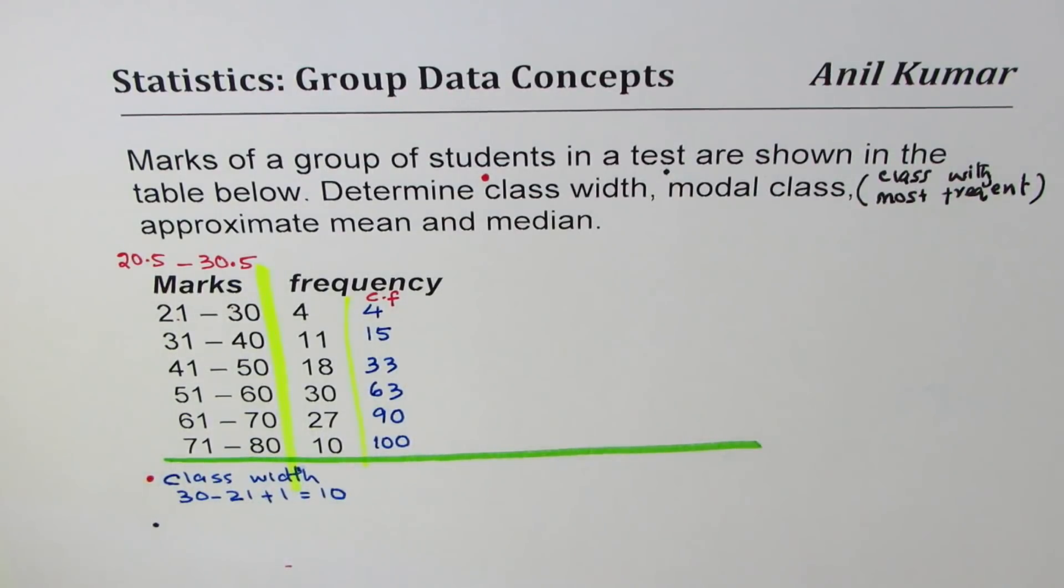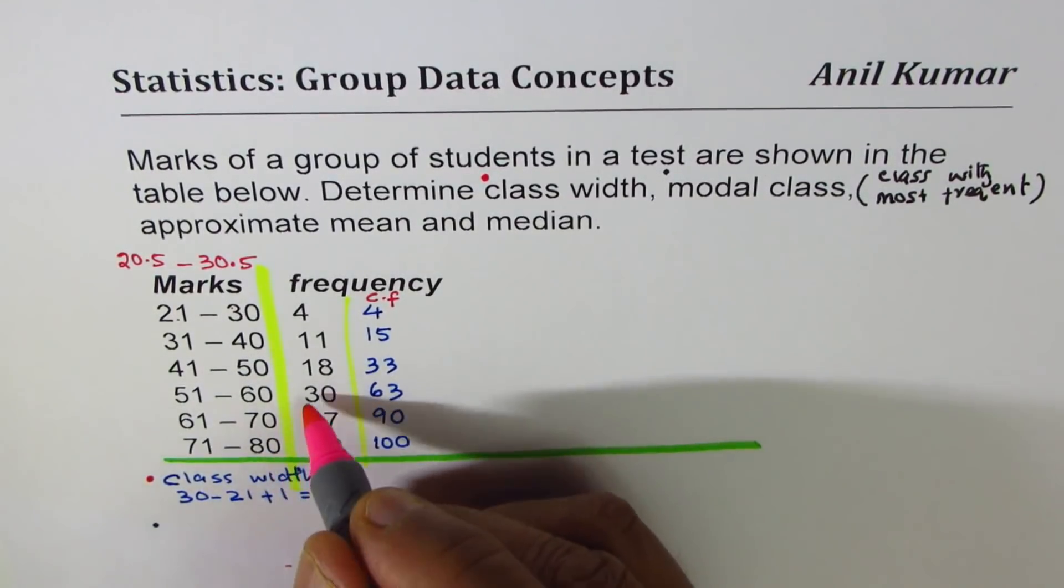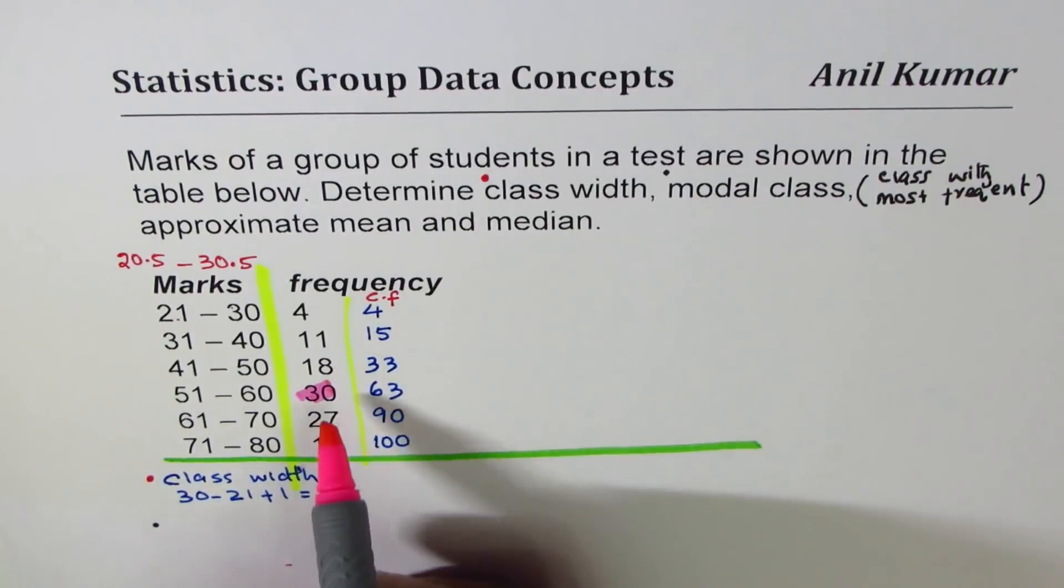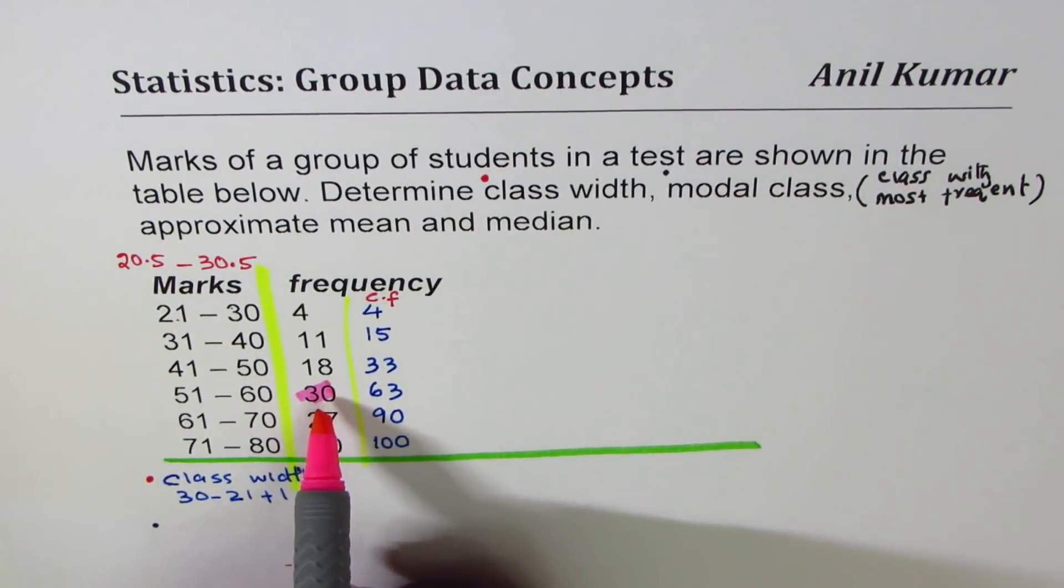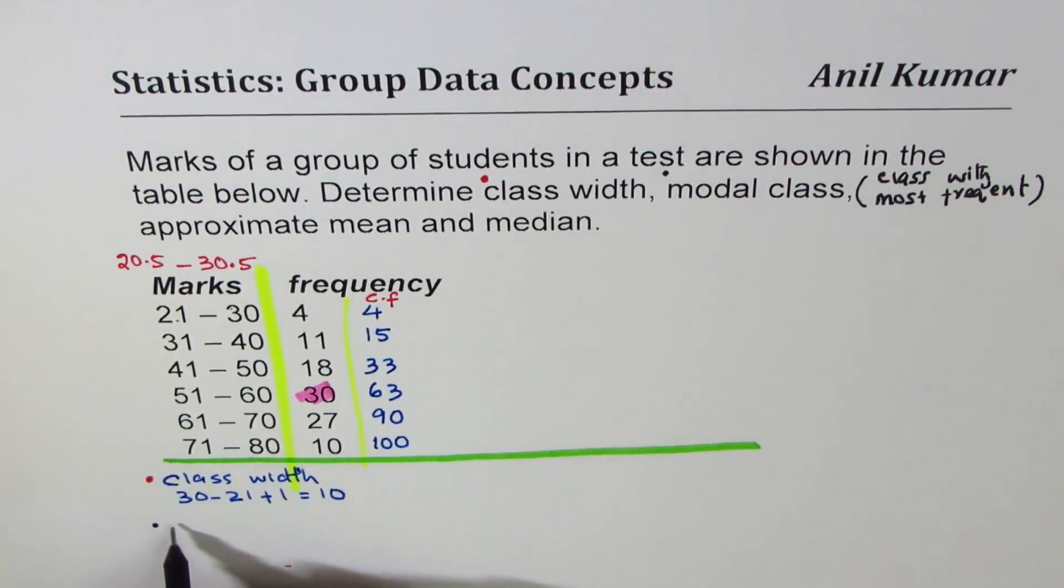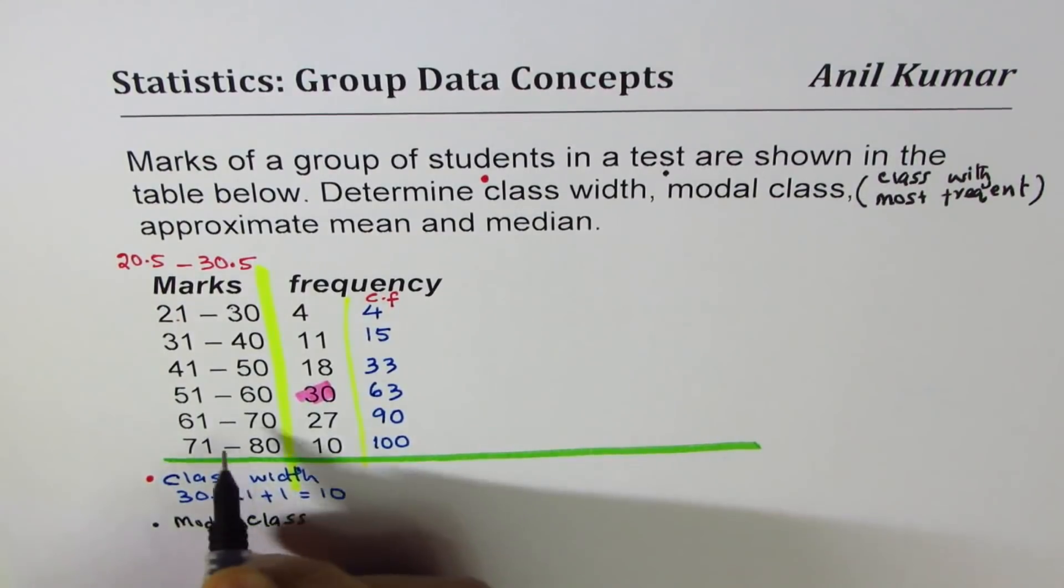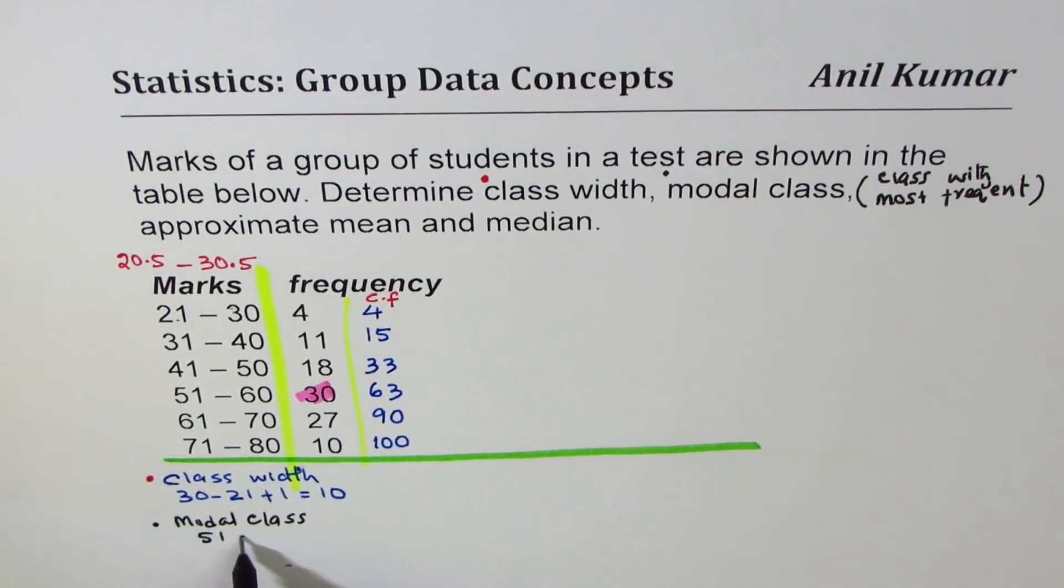So just look for the highest number in the frequency. In our case the highest number happens to be 30. So that is most frequent. The class in which that 30 is, is 51 to 60. Therefore we can write this modal class as 51 to 60.